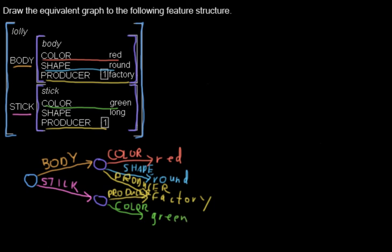I'm close to running out of colors, but I think I can use this one and I will draw another arrow for shape. And shape points to long. And now this is the graph that represents this feature structure.